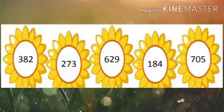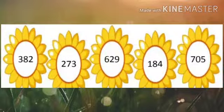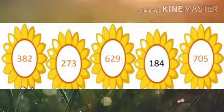Here we are having numbers 382, 273, 629, 184 and 705. To find out the smallest number, first we have to check the digit on the 100th place. The digits 3, 2, 6, 1 and 7 are on the 100th place. Which is the smallest digit? Yes, 1. So the number 184 is the smallest number.